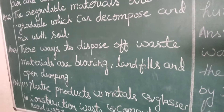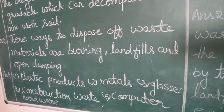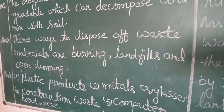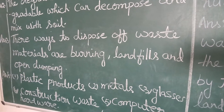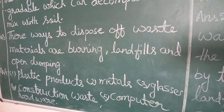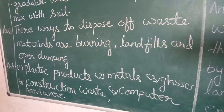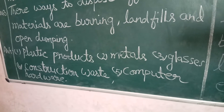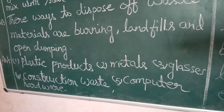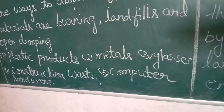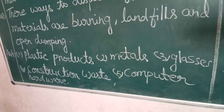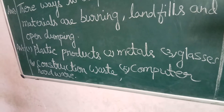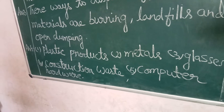Question number 3: Give any three ways to dispose of waste material. Answer: three ways to dispose of waste material are burning, landfill, and open dumping. Question number 4: Name any five non-biodegradable waste materials. Answer: 1. plastic products, 2. batteries, 3. glass, 4. construction waste, 5. computer hardware.